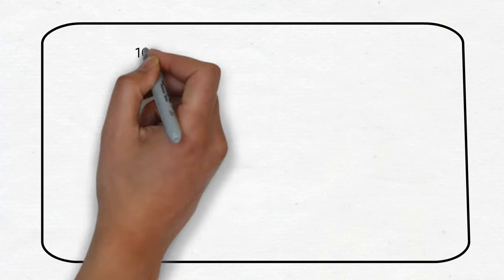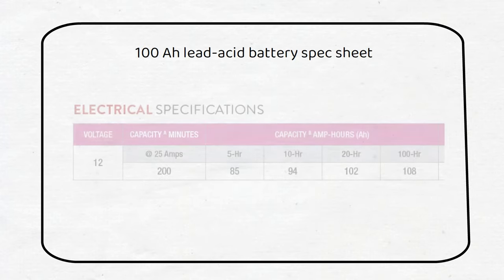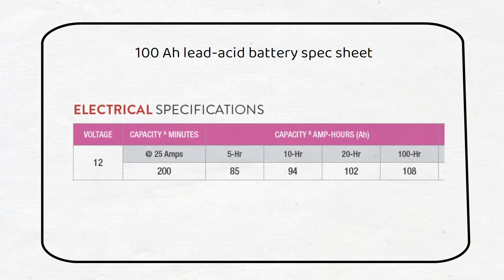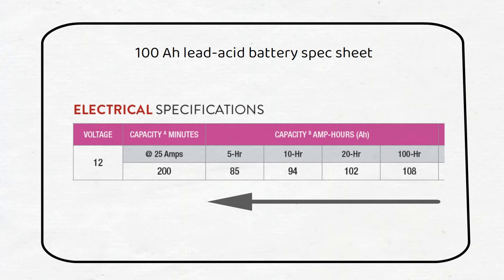If we go higher than the rated C-Rate for lead acid, we will reduce the battery capacity. Let's take a look at this graph from a popular lead acid battery. We can see that the battery capacity in amp hours is reduced when the C-Rate rises. This is because there is more heat generation and more internal resistance. The battery will become less efficient. This is important in sizing your system.